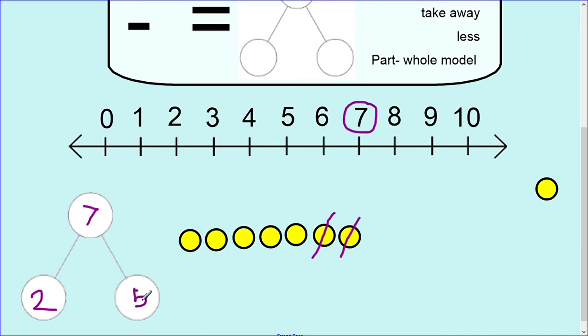Seven is the whole, two is a part and five is a part. Now if we were to write this as a number sentence, we would start with the number that we started with, which was seven. We crossed out two, so we took away two or we subtracted two, and it equaled five.